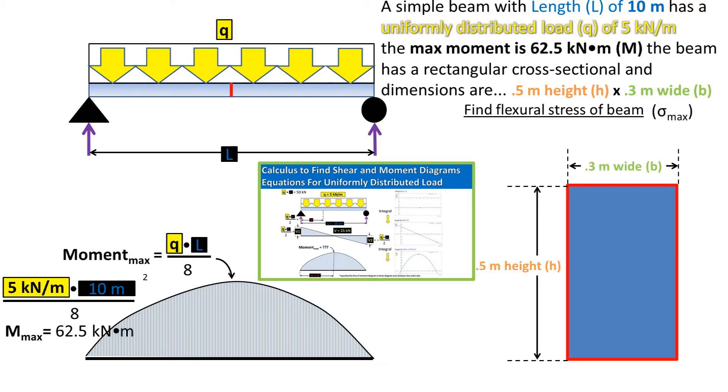The beam is rectangular and has a height of 0.5 meters and a width of 0.3 meters. We want to find the max flexural stress, which is the normal stress in the beam due to bending.